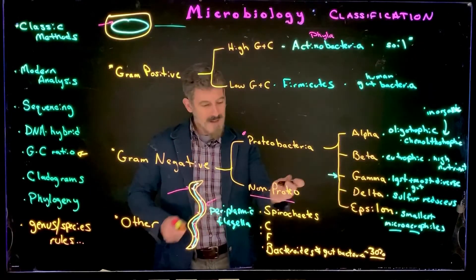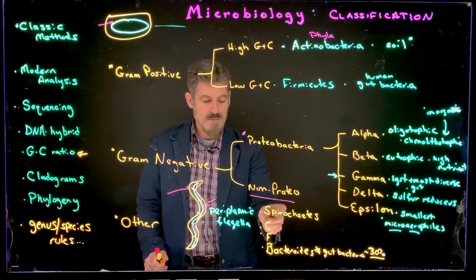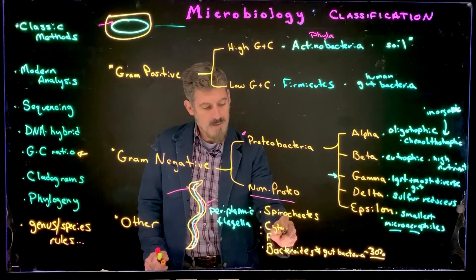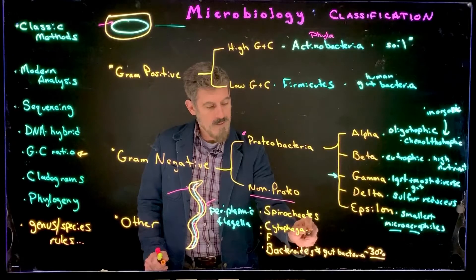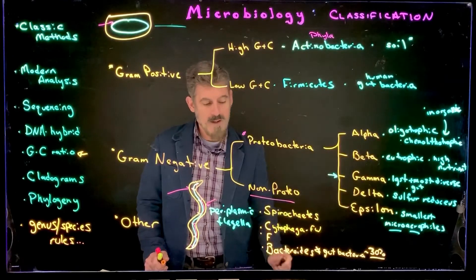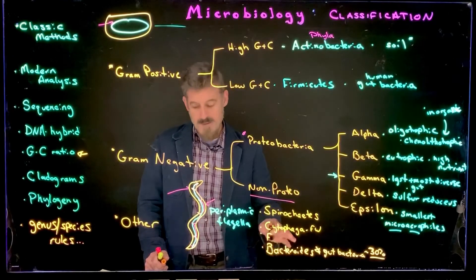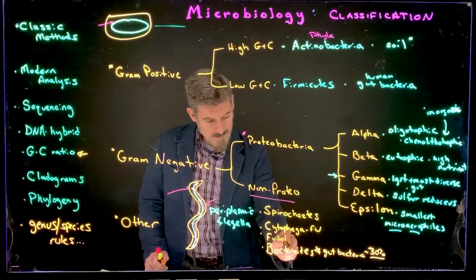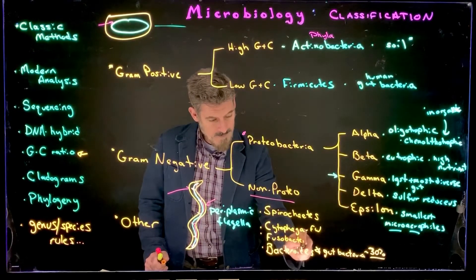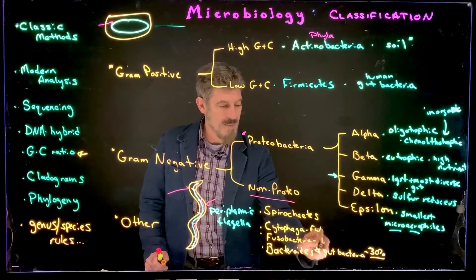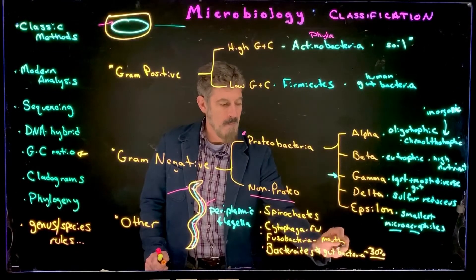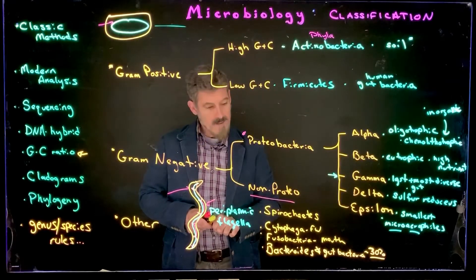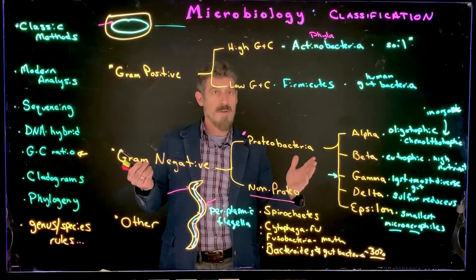These names are important because they'll come up again when we talk about the human microbiome and other aspects of our biology. The other groups are small and won't be covered much in this course: Cytofaga, typically a freshwater aquatic bacteria that glides, and Fusobacteria, which are found in the human mouth.